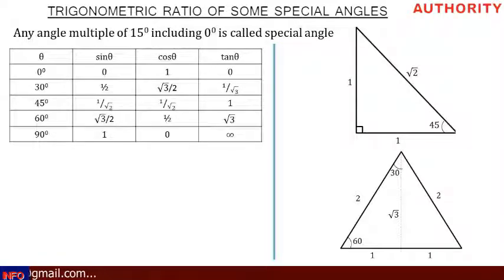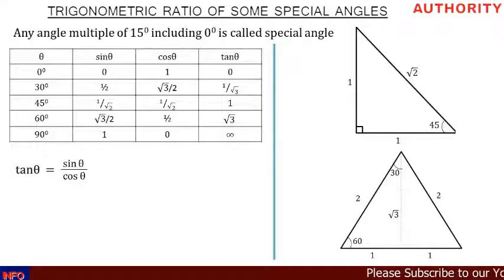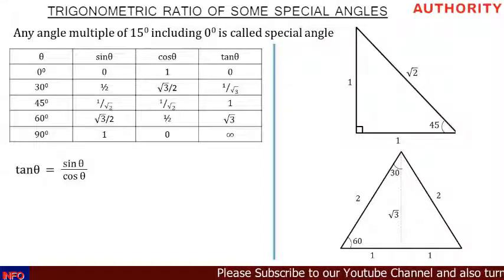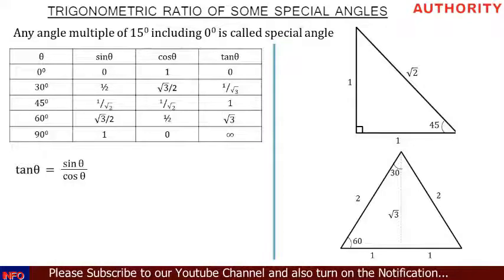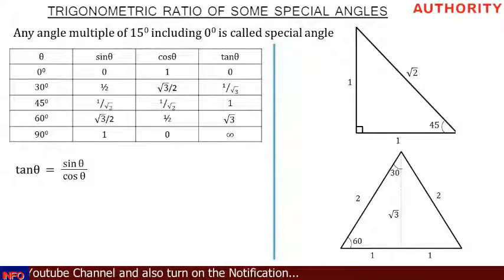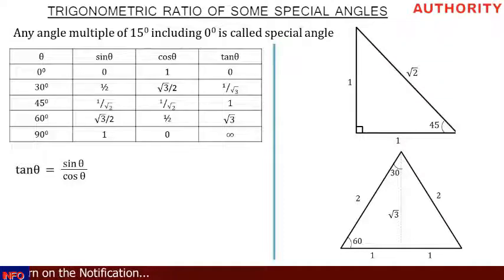Here are some important tips. Tan theta is the same as sine theta over cos theta. For example, tan 30 degrees equals one over root three — you can verify this by computing sine 30 degrees over cos 30 degrees, which also gives one over root three. This identity holds for all angles, so tan theta equals sine theta over cos theta.